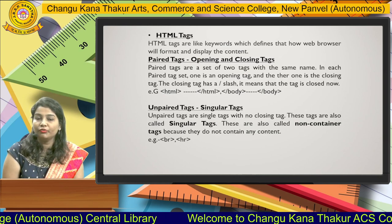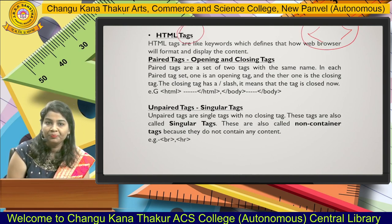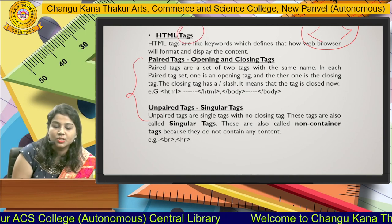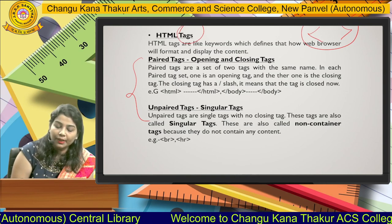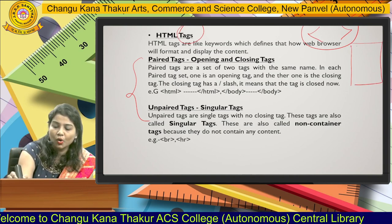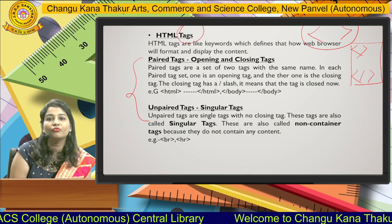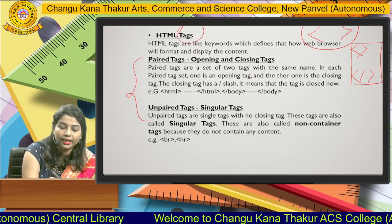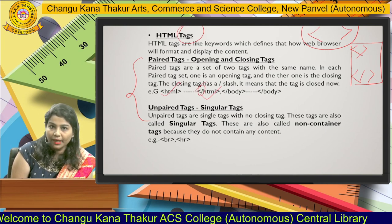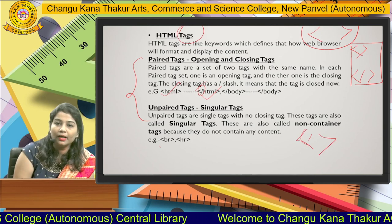Now we will move forward to HTML tags. Since HTML is a markup language, it uses tags. Basic HTML tags are divided into two parts: first is the pair tag and second is the unpair tag. A pair tag is also called an opening and closing tag, and an unpair tag is also called a singular tag. For a pair tag, once you open the tag, you must compulsory close it by adding a forward slash in front of the tag — for example, the html open tag and html close tag. An unpair tag does not require closing — for example, the br tag and hr tag.